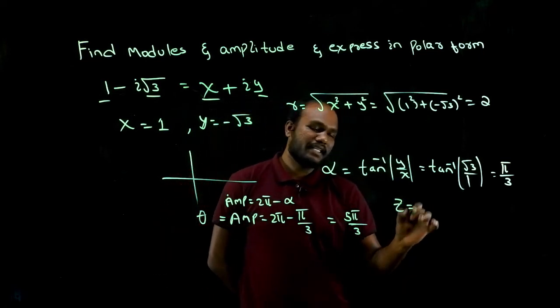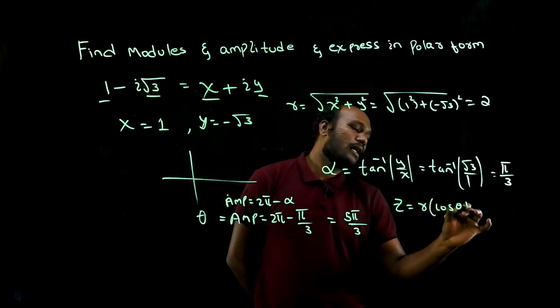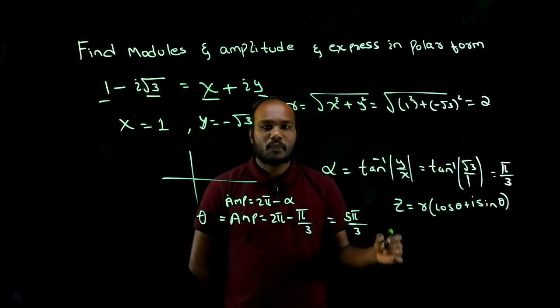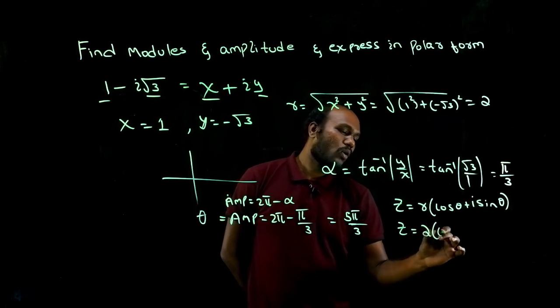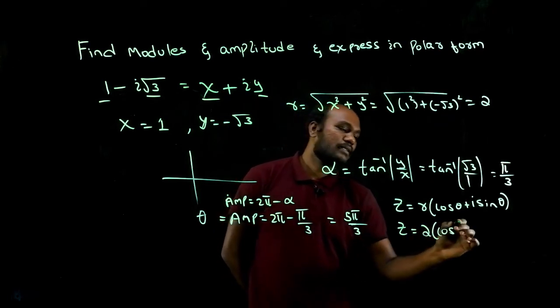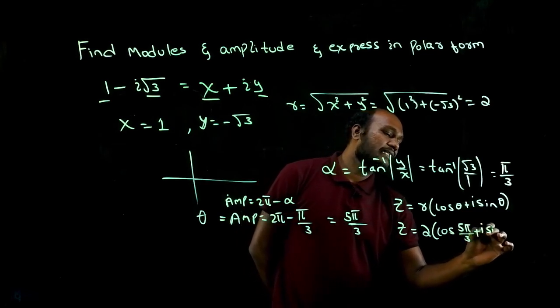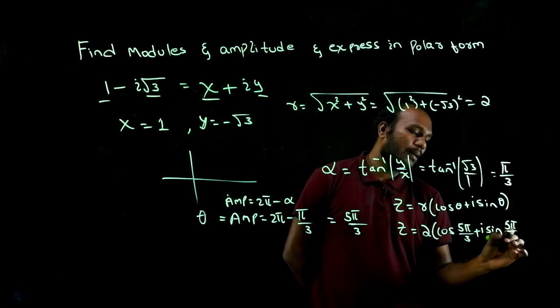What is the polar form? Z is equal to R into cos theta plus i sine theta. This is the formula for polar. So Z is equal to, what is R? R value is 2. Cos theta value is how much? 5 pi upon 3 plus i sine, again theta value is what? 5 pi upon 3.